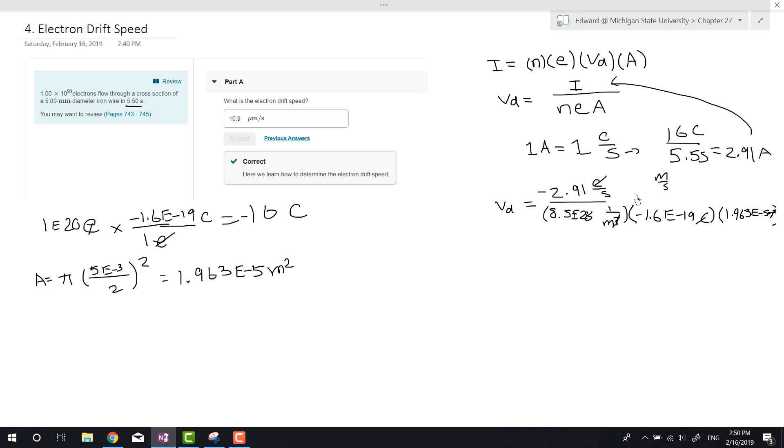So if we type this in the calculator, 2.91 times 1.6 e to negative 19 times 8.5 e to 28. And then if we take 2.91 divided by the denominator, we'll get 1.089 meters per second, times 10 to the negative 5 meters per second.